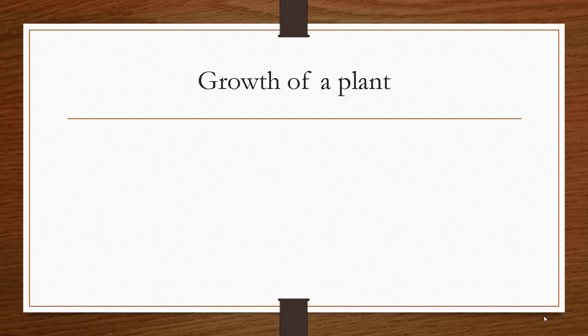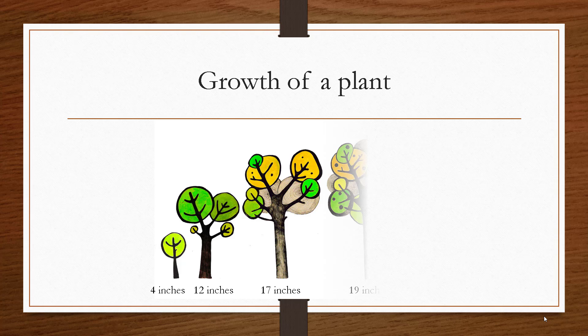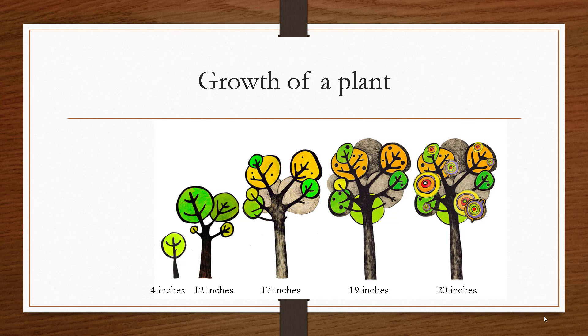Let's start off by looking at an example. Suppose we were growing a plant. Now the plant starts off small and at the beginning it might only be four inches tall, but after a month it might be 12 inches, then 17, then 19, then 20 inches.